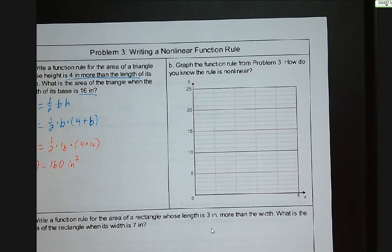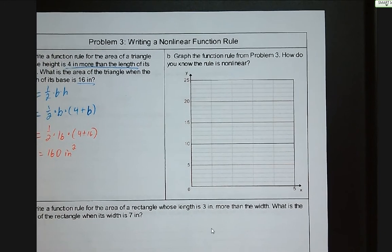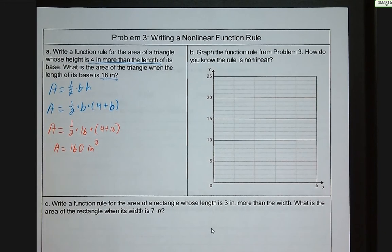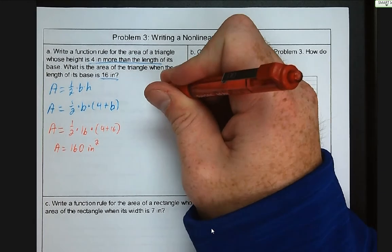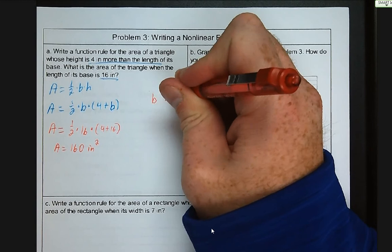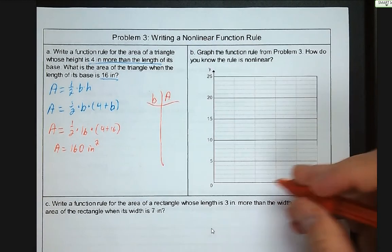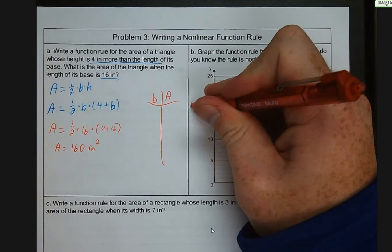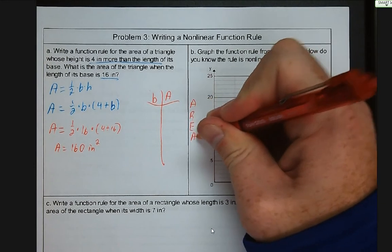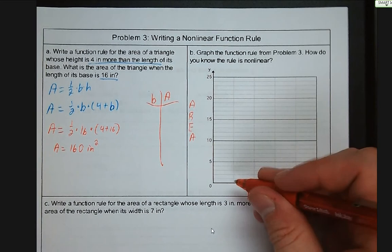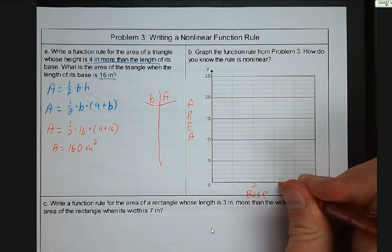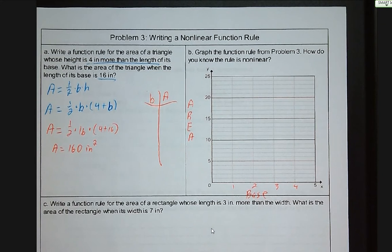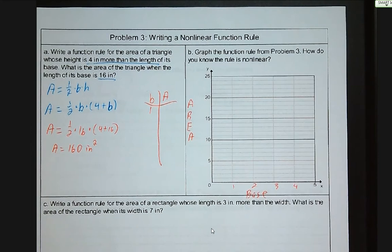So we want to graph the function rule from problem three. And we want to know how do we know it's not going to be linear. So let's just start off with different values for our base and our area. And let's start with one, two, three, four, five. So we've got one through five as our possible amount. So if the base is one, so we have 0.5 times one times five, which would be 2.5. We have 0.5 times two times six, which is six.